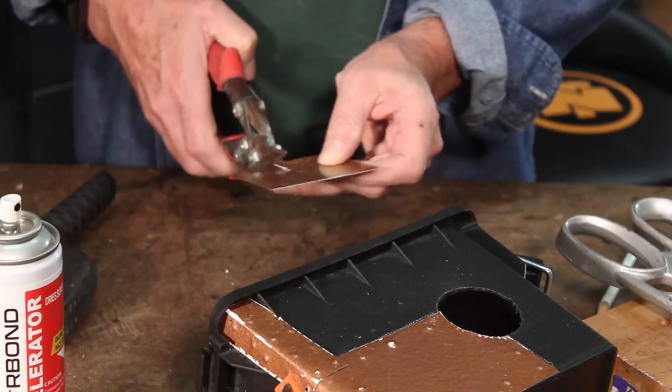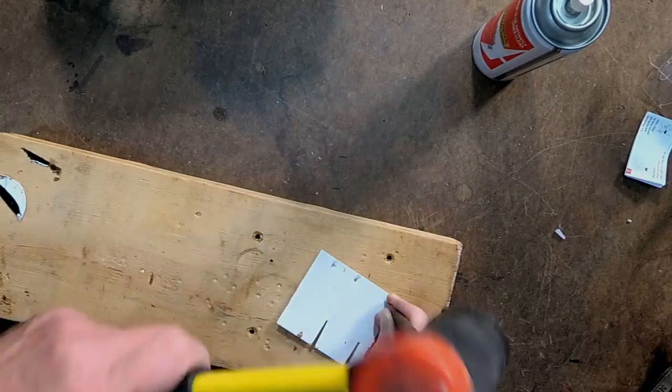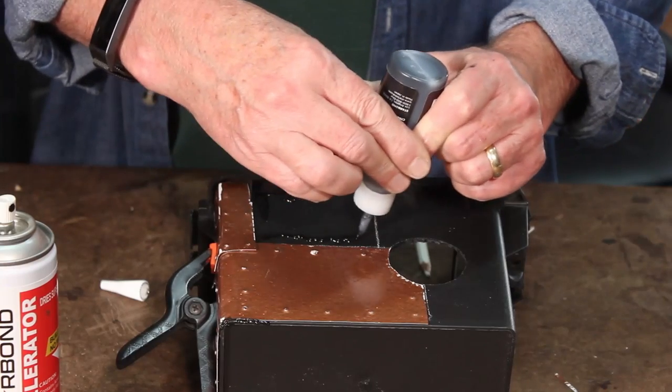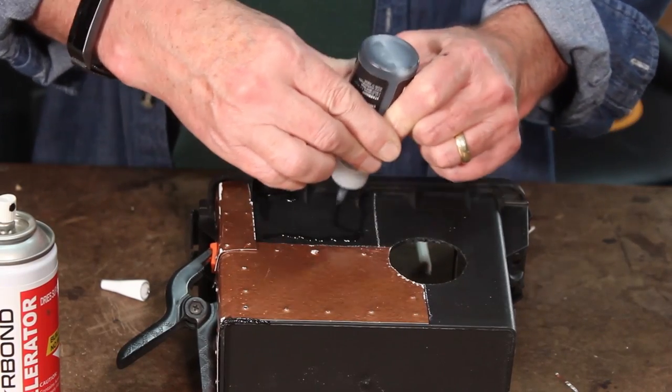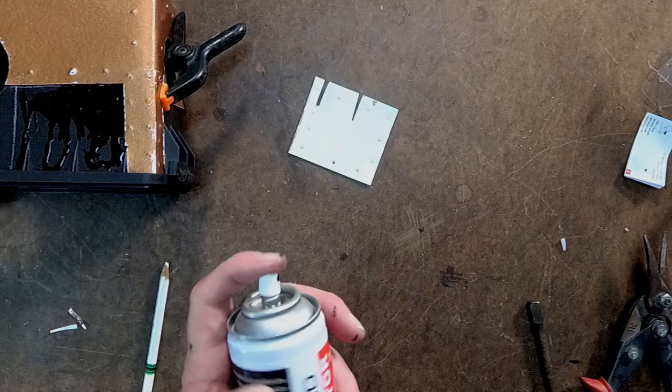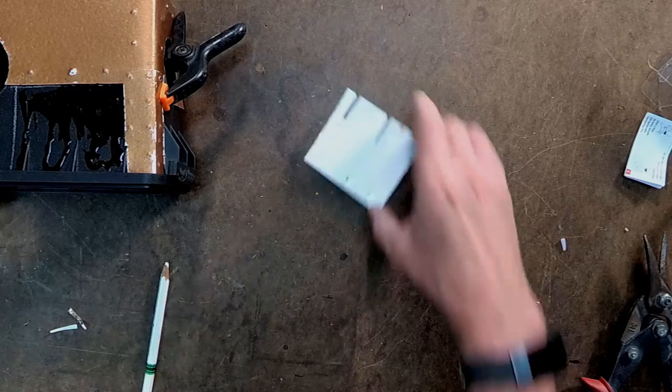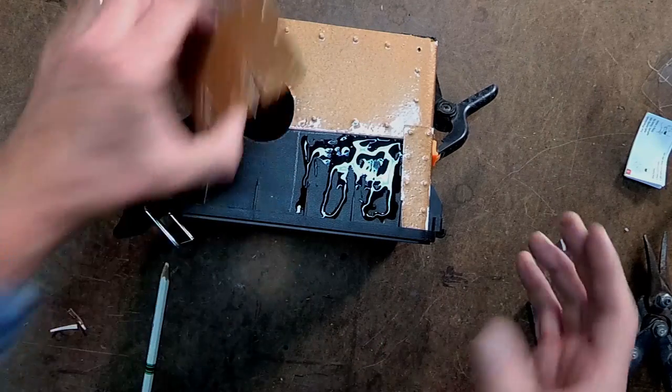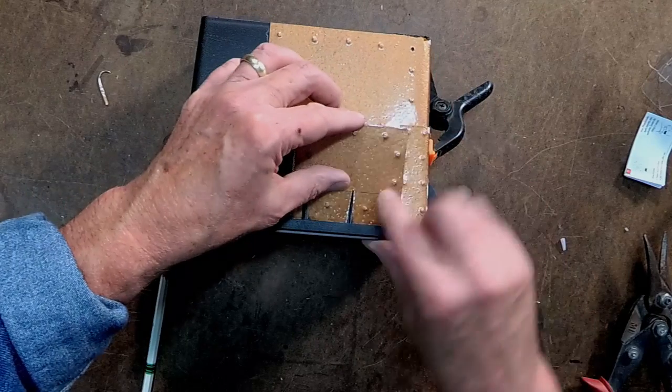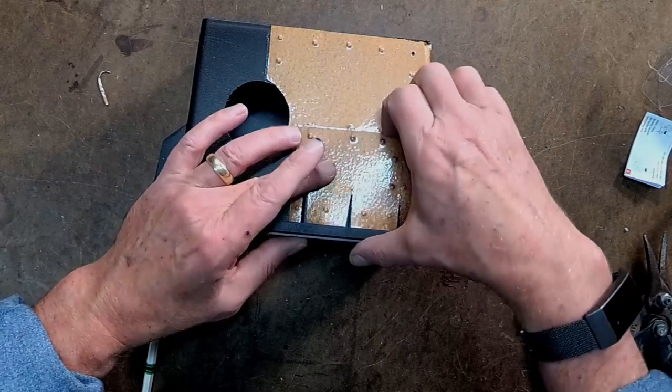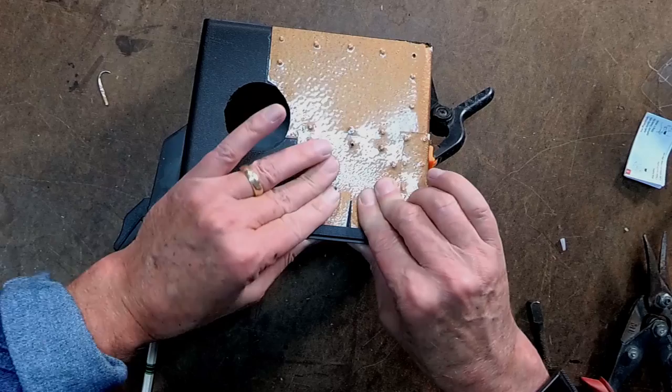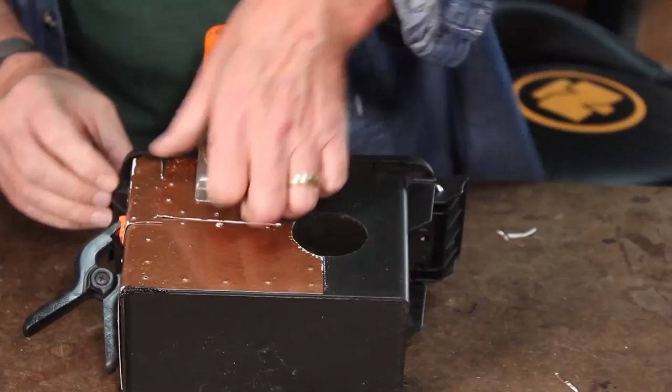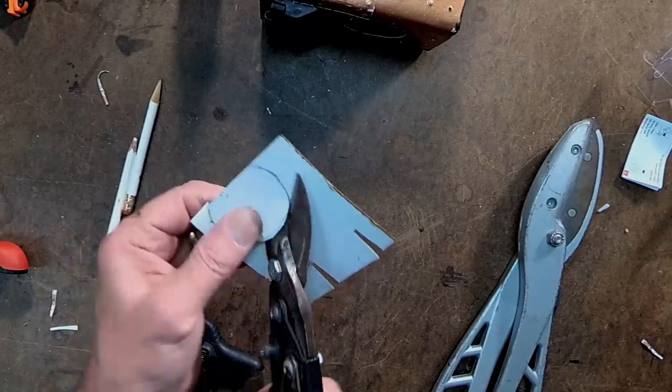I'm going to trim out where those flanges at the top of it are, and continue tapping in the rivets, and using the Starbond. And like I say, the accelerator really helps move this product along. It sets everything up very quickly. You could use other kinds of glue, and that's fine, but I just like the Starbond because it's a good product, and it adheres very fast.